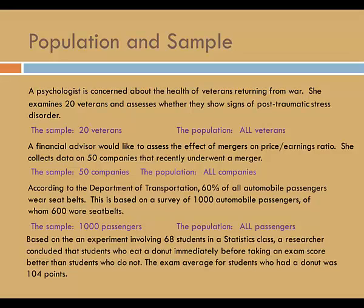Based on an experiment involving 68 students in a statistics class, a researcher concluded that students who eat a donut immediately before taking an exam score better than students who do not. The exam average for students who had a donut was 104 points. This is a sample of 68 students, and the population would be all students. The average of 104 points comes from a sample, and therefore is a statistic.